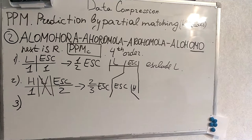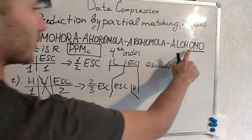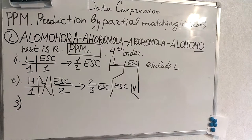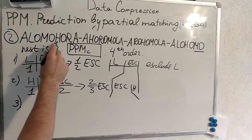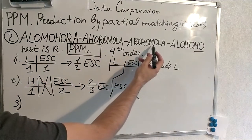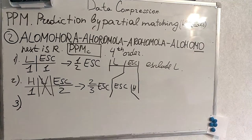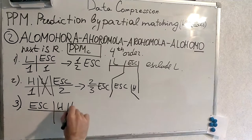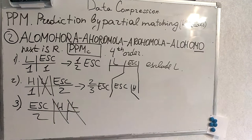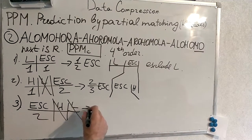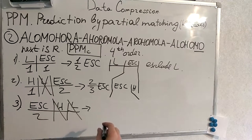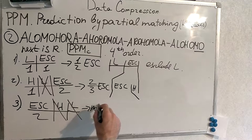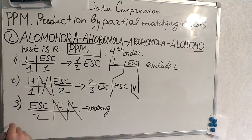The next context is MO. After MO we again only find H and L — both have been excluded. Two symbols have been seen; both are excluded. The escape symbol has counter two, so we encode it again and drop further to the lower context.